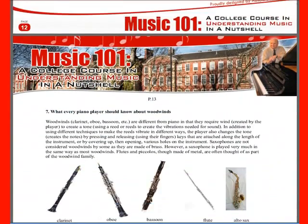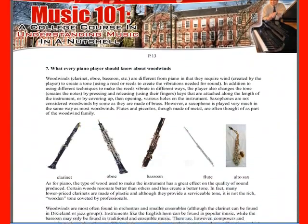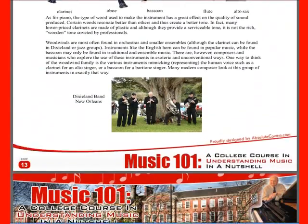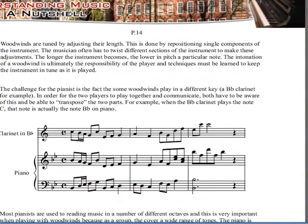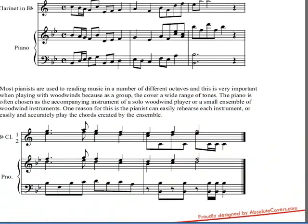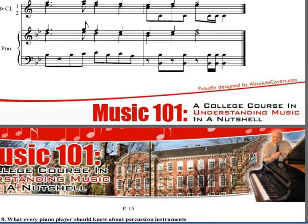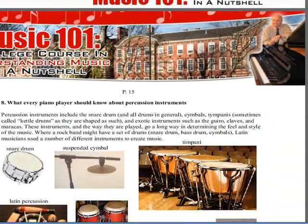And then what every piano player should know about woodwinds. They're transposing instruments as well, and so a clarinet in B flat is different than a sax in E flat, for example. And you have to know — if you're a piano player, you have to be prepared, because they could not read off your piano music and make it sound right. So you either have to transpose, or they have to have some separate music, and you need to know about that.